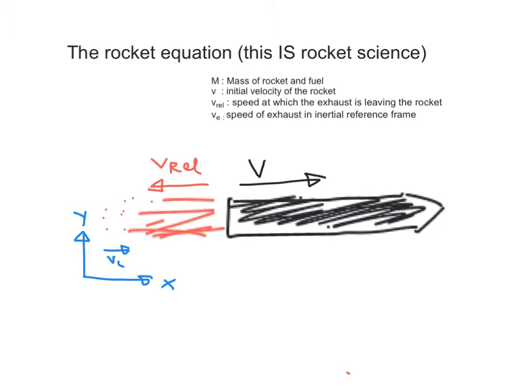So let's start with the situation we're having. We are having a rocket of mass M which includes the fuel that is stored within the rocket. This rocket is traveling in space at an initial velocity v. There are particles leaving the rocket at the back at the relative speed to the rocket of v_rel and these particles as measured from somebody outside the rocket that would not be traveling would be traveling at a speed of v_e.